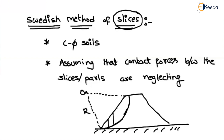We divide the failure mass into a number of parts such that accuracy is not compromised. In the exam, the number of parts will be given. So dividing this failure mass into six different parts — one, two, three, four, five, six — that means this failure mass is divided into six different parts.